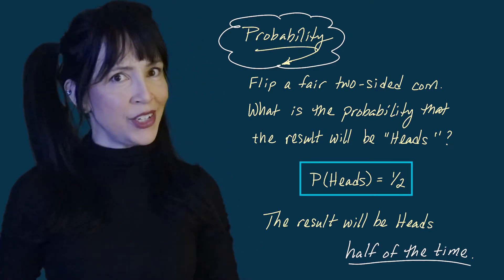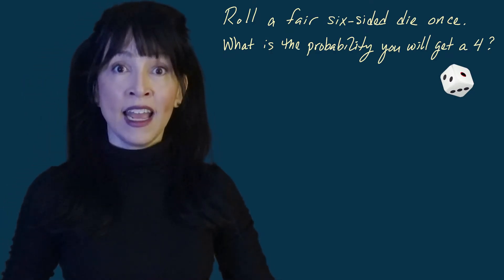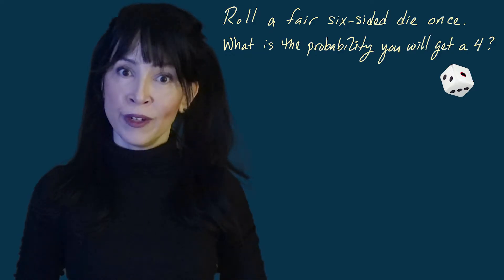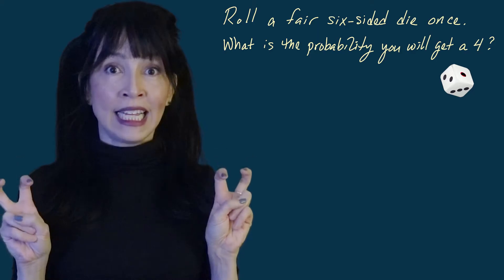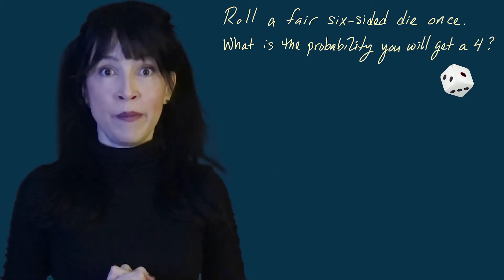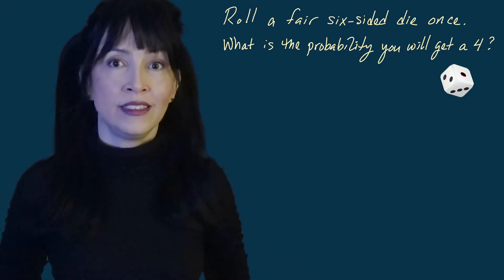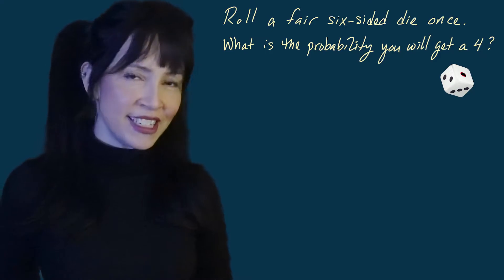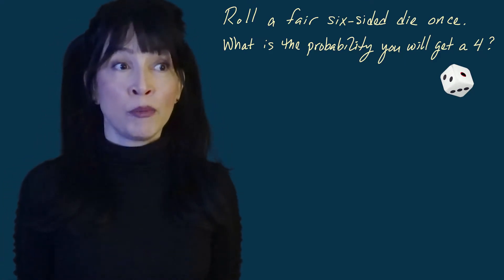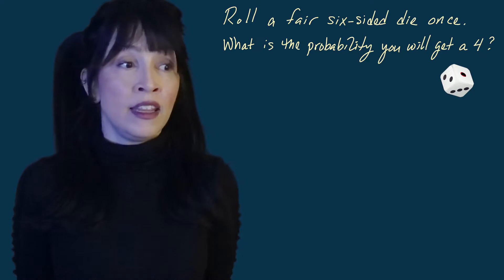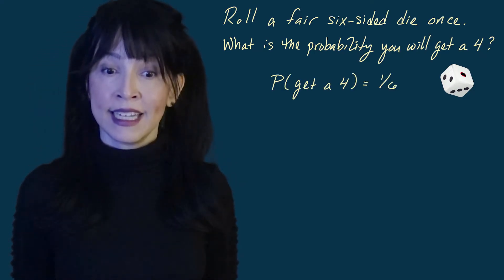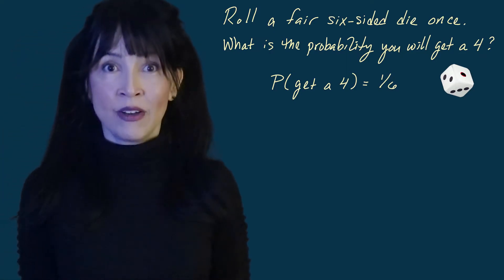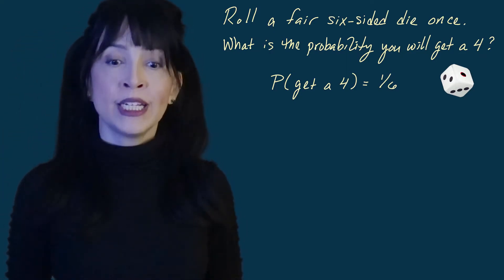Now we're going to roll a fair six-sided die and I want to know the probability that we're going to see a four. Because all of the sides are equally likely — you're not more likely to get a four or a two — there are six sides and your chances of getting a four is one in six, or one sixth. The probability you get a four is one sixth.